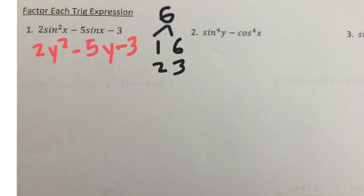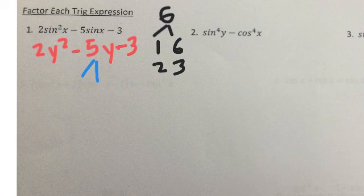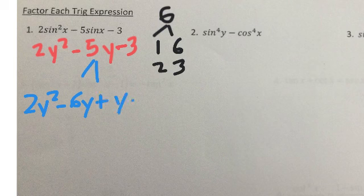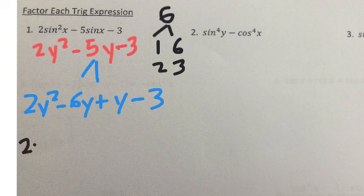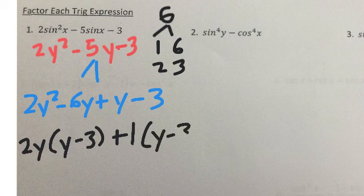So both these might work. But it has to be here because we need opposite signs where one's negative and one's positive. So we're going to rewrite this as 2y squared minus 6y plus y minus 3. And then we GCF 2y, so that's going to be y minus 3. This is GCF of 1, y minus 3.